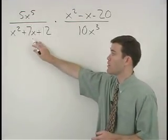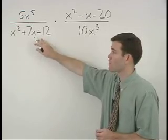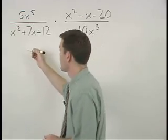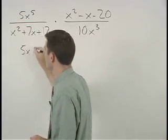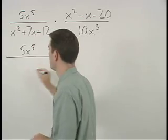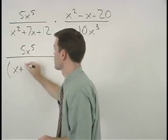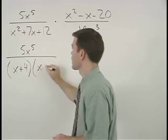So here notice that the denominator of our first expression factors and we have 5x to the fifth over x plus 4 times x plus 3.